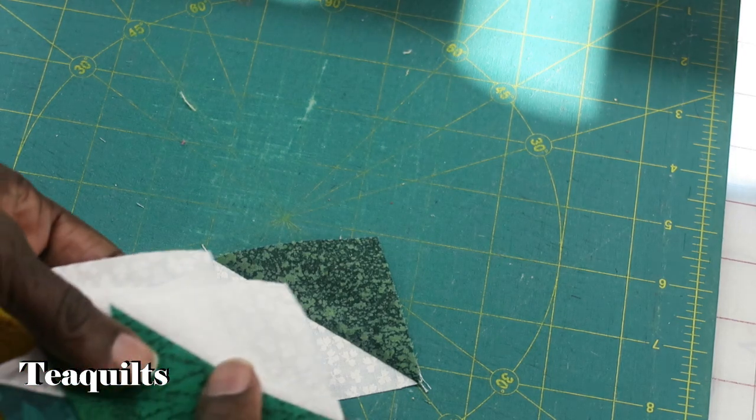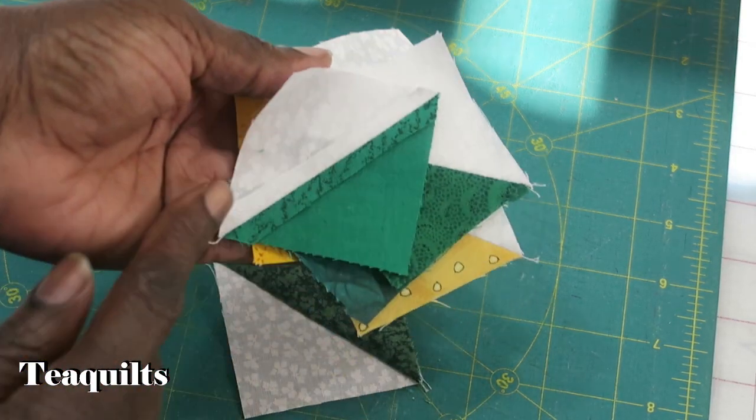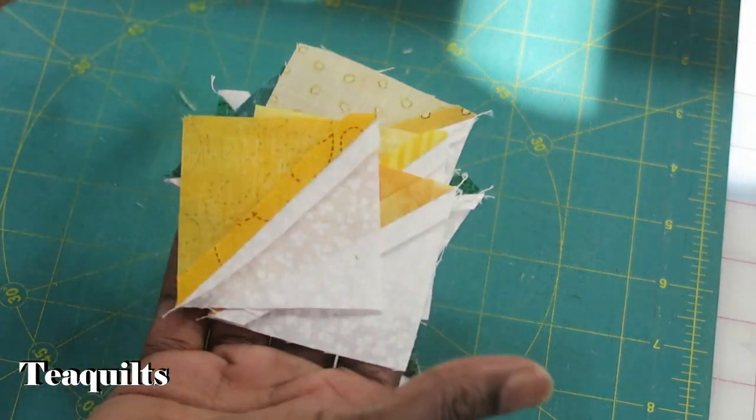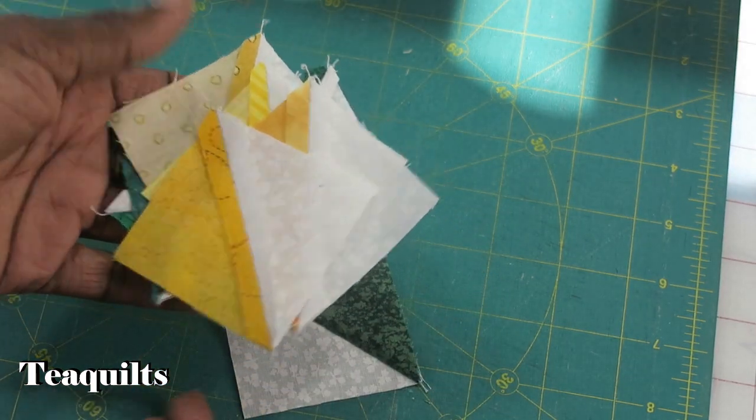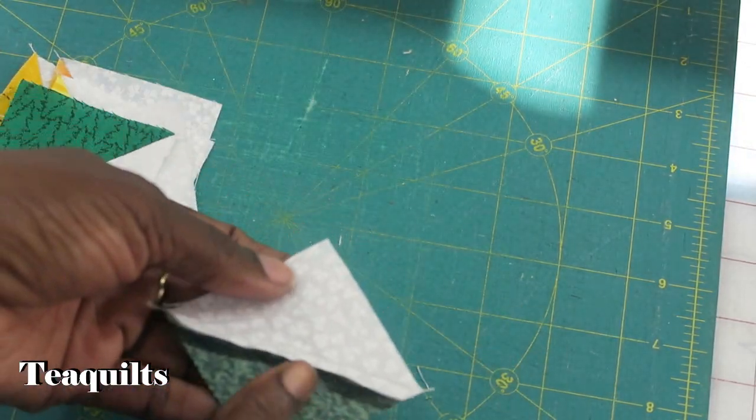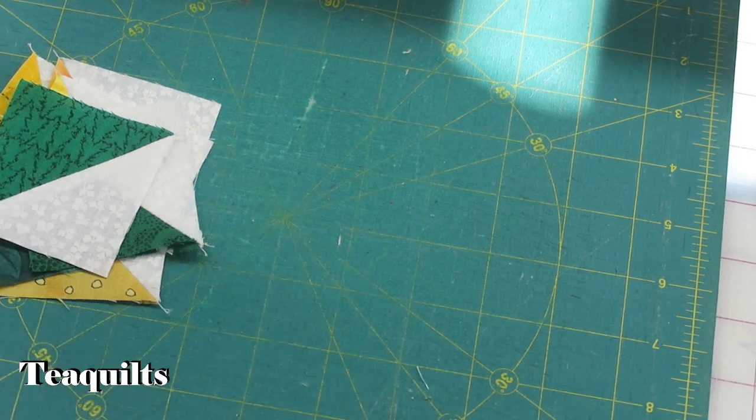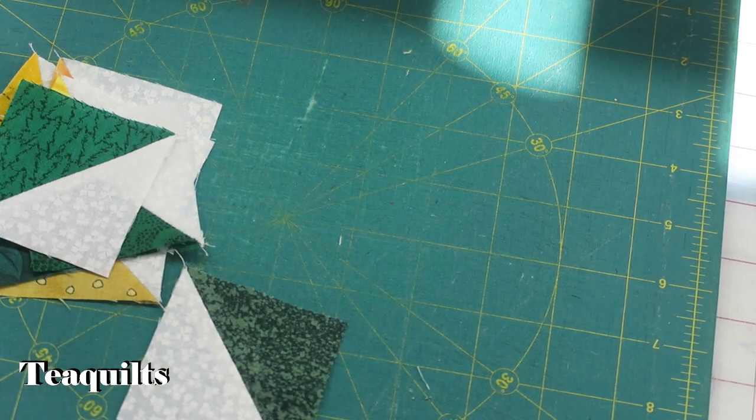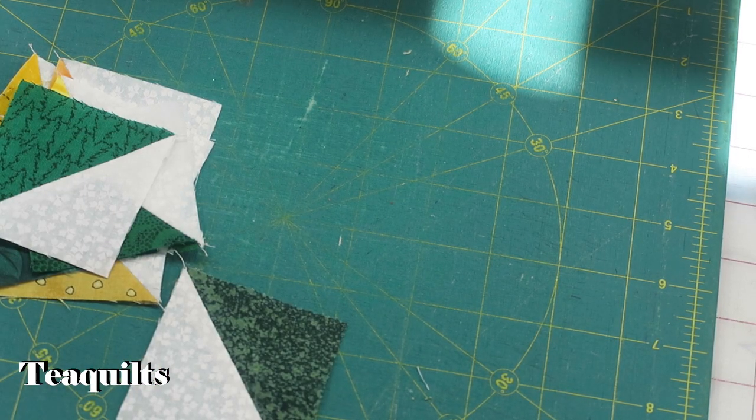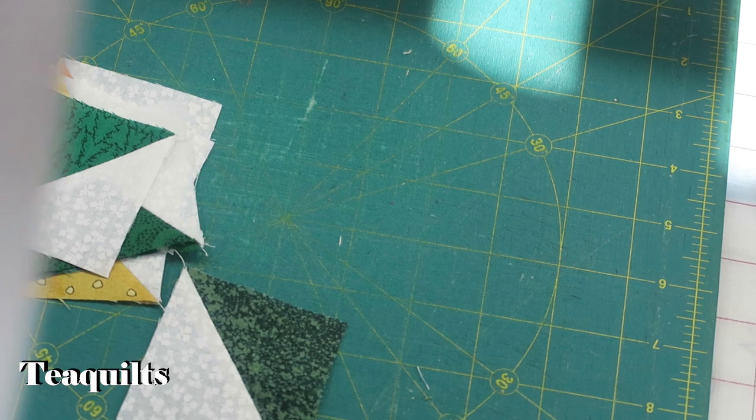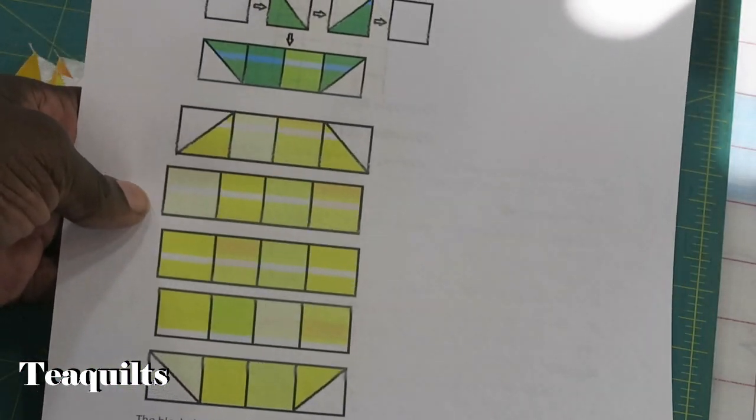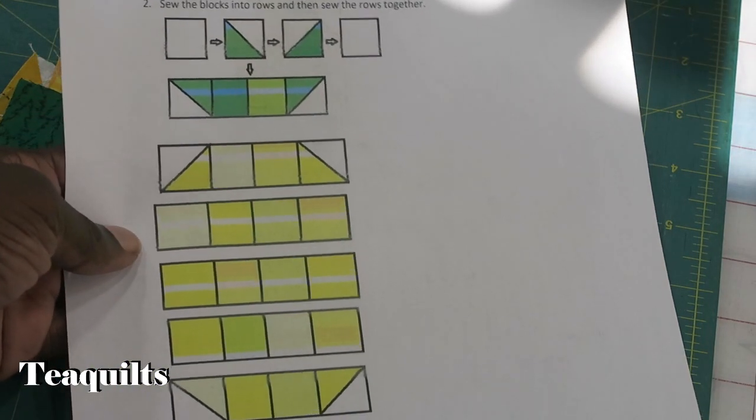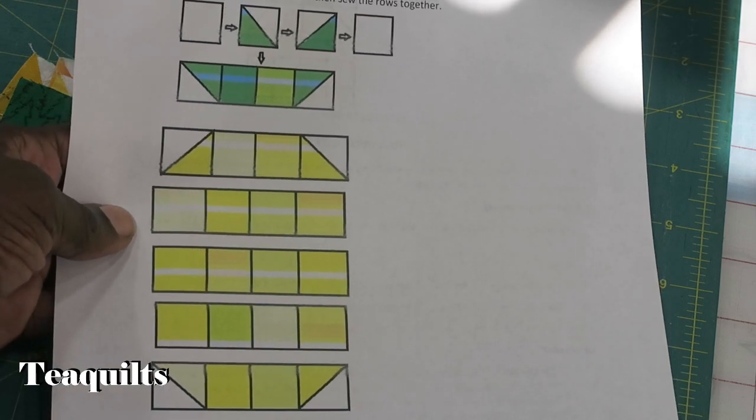You can press your seams toward the dark if you like, but because I'm just used to pressing my seams open, I just pressed all of my seams open and I have all eight half-square triangles here. Pressing is now all done. The next step that I need to do is I just need to lay out my pieces according to this grid, so I am going to do that and then I will be right back.